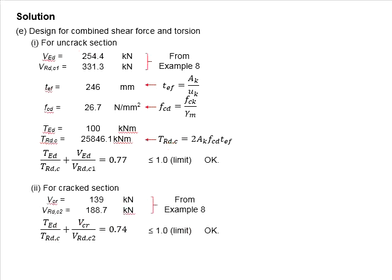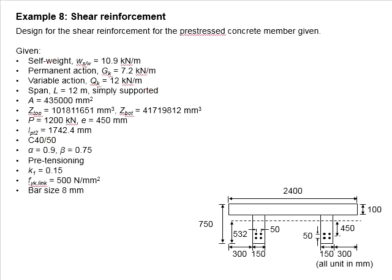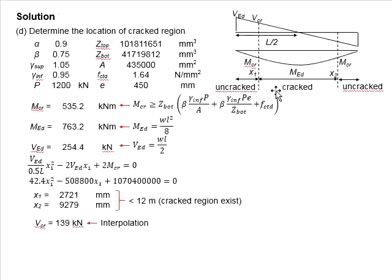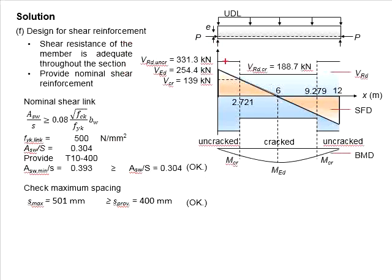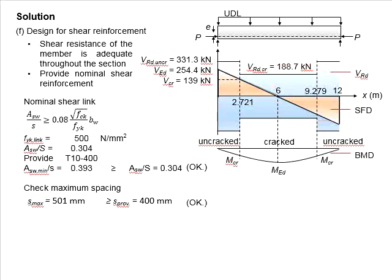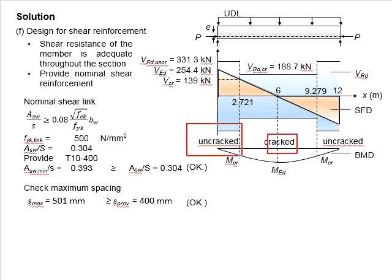Next, we need to check the adequacy of the proposed reinforcement under the combined conditions of shear force and torsional load. This example is an extension of Example 8 on the design of shear reinforcement, and some information needs to be extracted from that example. Based on Example 8, the shear resistance of the concrete section is always greater than the shear load, so nominal shear links are provided at both cracked and uncracked sections.